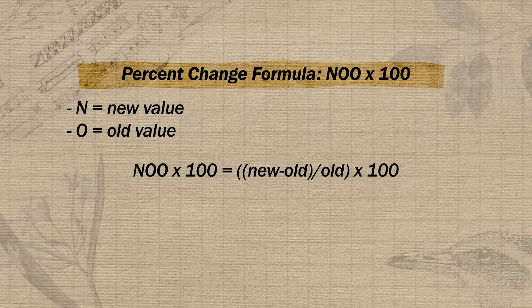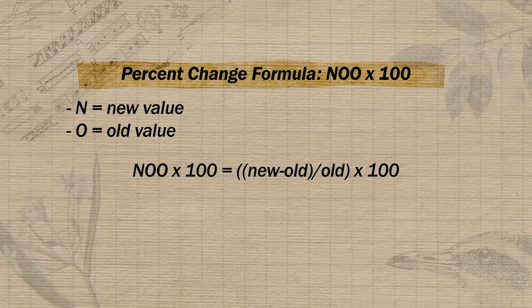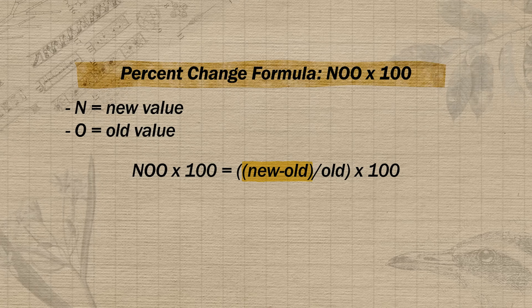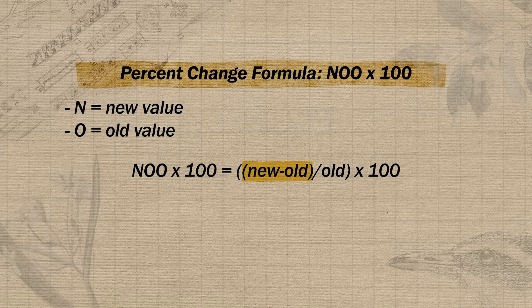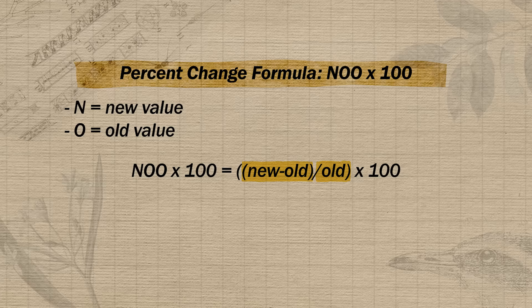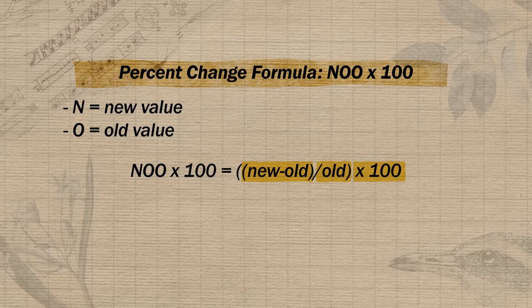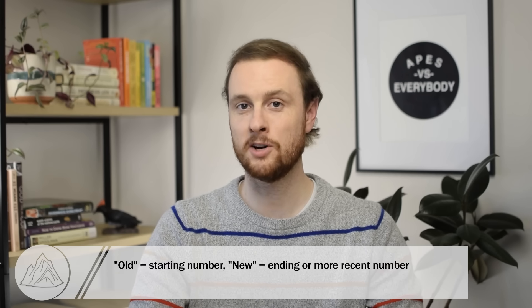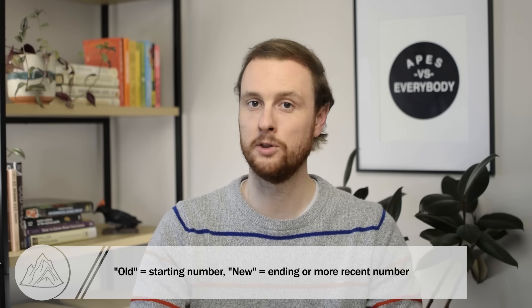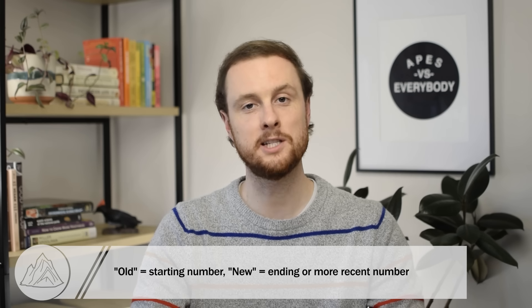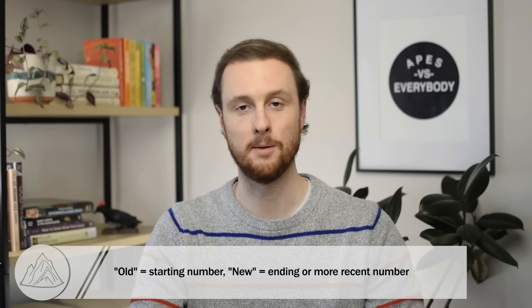Looking more closely at the formula, we need to use parentheses to separate new minus old, place that quantity over old, and then multiply the whole thing by 100. Since percent change problems always give you a starting number and an ending number, just remember that the starting number is the old number and the more recent number is the new number.